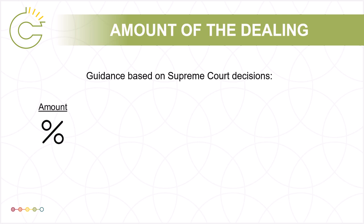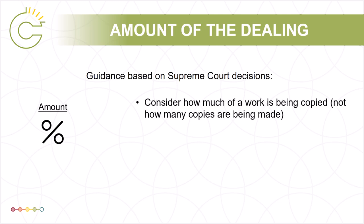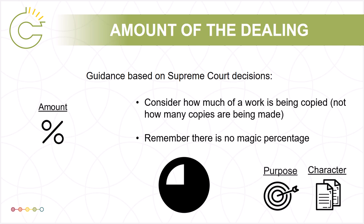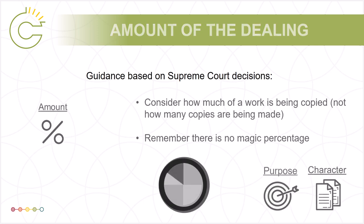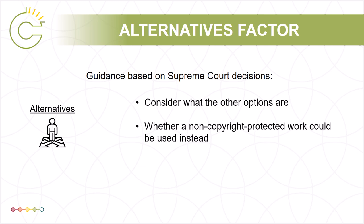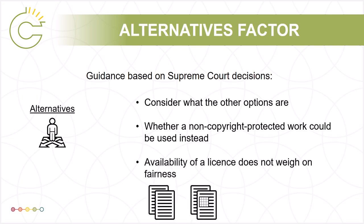The amount of the dealing factor deals with the proportion of the work copied, not the total number of copies made, which is considered under the character factor. While copying a greater proportion of a work may tend toward unfairness, the Supreme Court has noted that in some cases an entire work can be copied fairly. For example, it may be necessary for research or private study to copy the entirety of an academic article or court decision, but not to copy an entire literary work for criticism or review. The alternatives factor considers what alternatives to the dealing might have been used. If a non-copyright protected equivalent could have been used to achieve the same purpose, this tends toward unfairness, and the extent to which the copying was necessary to achieve the ultimate purpose is an important element.